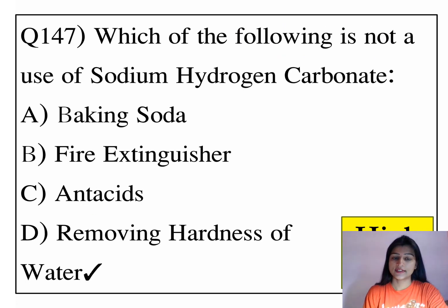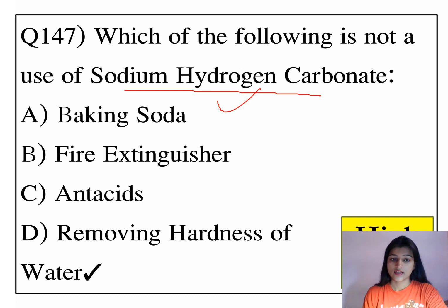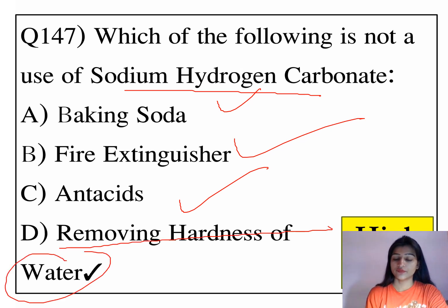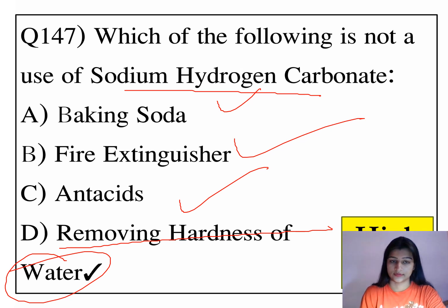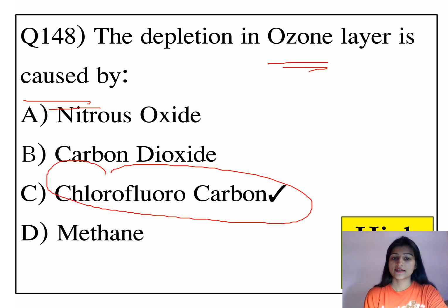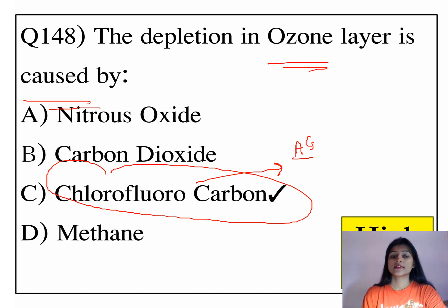Which of the following is not a use of sodium hydrogen carbonate? Sodium hydrogen carbonate is baking soda. It is used as a fire extinguisher and as an antacid. But it is not helpful in removing the hardness of water. The depression in the ozone layer is caused by chlorofluorocarbons, which is the harmful gas produced by air conditioning and refrigerators.